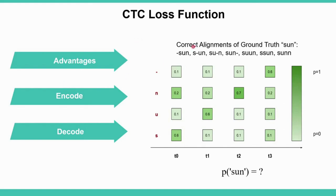For encoding, CTC creates correct alignments of the ground truth. For example, for the word 'sun', it uses blank spaces and possibly doubled characters to make valid alignments. The objective is to maximize the probability of 'sun' as the sum of probabilities of all alignments from the RNN output matrix. For decoding, techniques like word beam search, best path search, and others are available. The common idea is to remove blank spaces and collapse doubled characters into one.